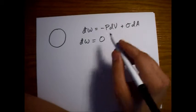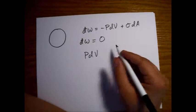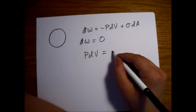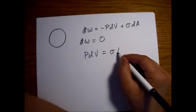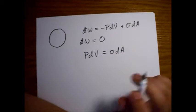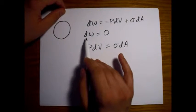And so what that tells us is that PdV for the bubble, or for the water drop first, is equal to sigma dA. So again, this is for equilibrium.